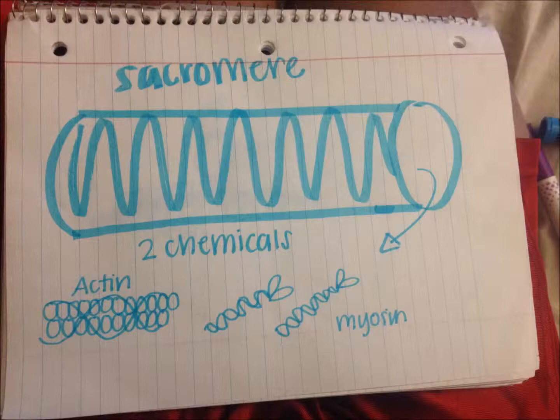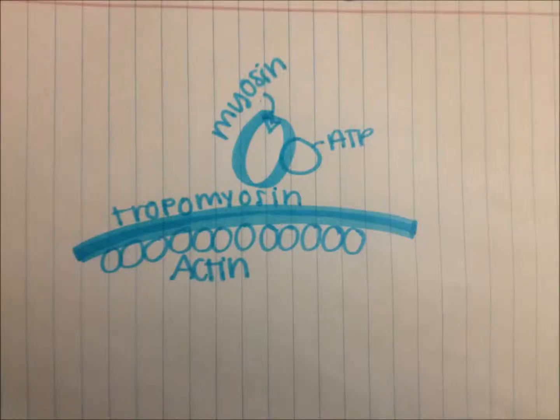The way I explain this is I put it into a scenario to help you better understand how the myosin gets a hold of the actin. I put it into a short story. So you have myosin — he's a double-headed freak and his main goal is to grab the actin.